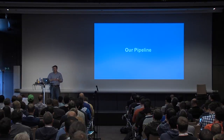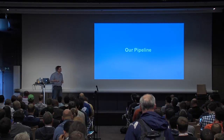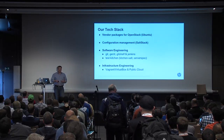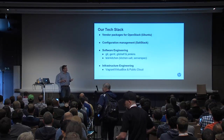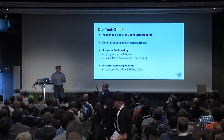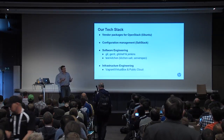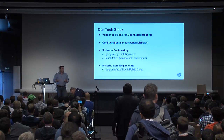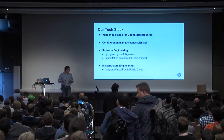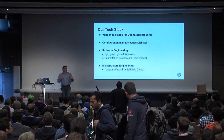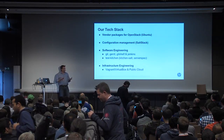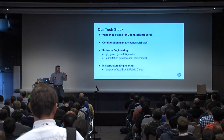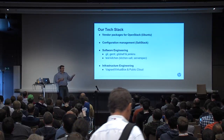Now that we've outlined why we'd want to do a pipeline for configuration management, let's move on to how our pipeline works. Our pipeline is pretty typical for a private cloud implementation. We use vendor packages from Ubuntu and SaltStack for configuration management and orchestration. We're using Gerrit and Jenkins for our software engineering pipeline. We're using Test Kitchen to validate our configuration modules, and our infrastructure engineering — how we build personal development environments and test environments — is built on Vagrant, VirtualBox, and public cloud. One of the nice things we've been able to do is use our own public cloud infrastructure to build ephemeral test systems to validate everything in our pipeline.